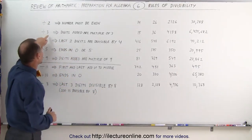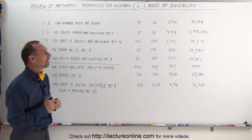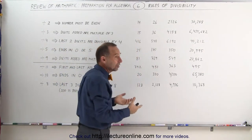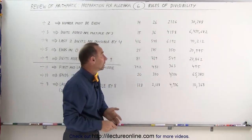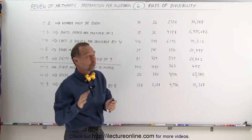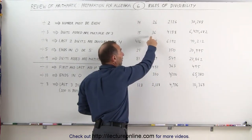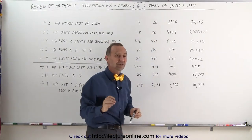How about the number 3 — what's the rule there? All we need to do is add the digits and see if that sum is a multiple of 3. For example, 1 plus 5 is 6, and since 6 is divisible by 3, so is 15. For 36, 3 plus 6 is 9, and since 9 is divisible by 3, so is 36. Another way of looking at it is if every digit in the number is divisible by 3 — 3 is divisible by 3, 6 is divisible by 3 — then the whole number must be divisible by 3.